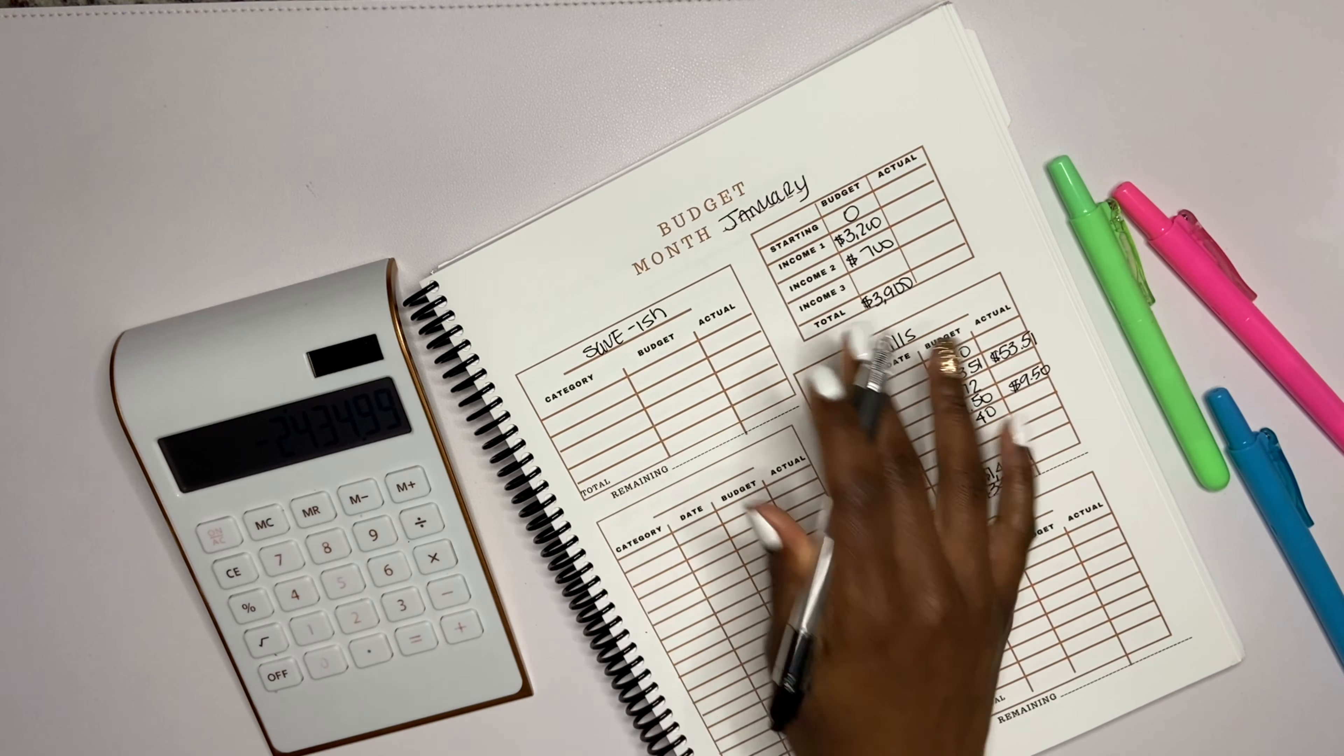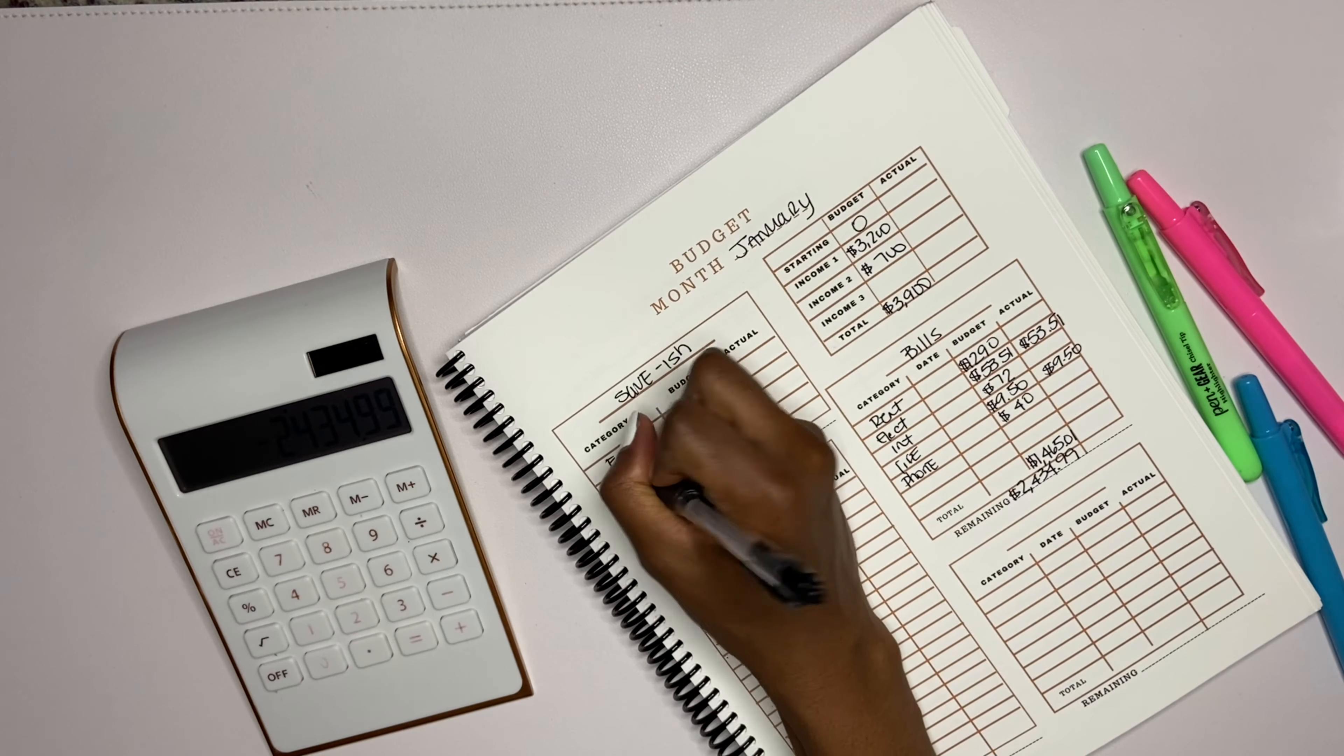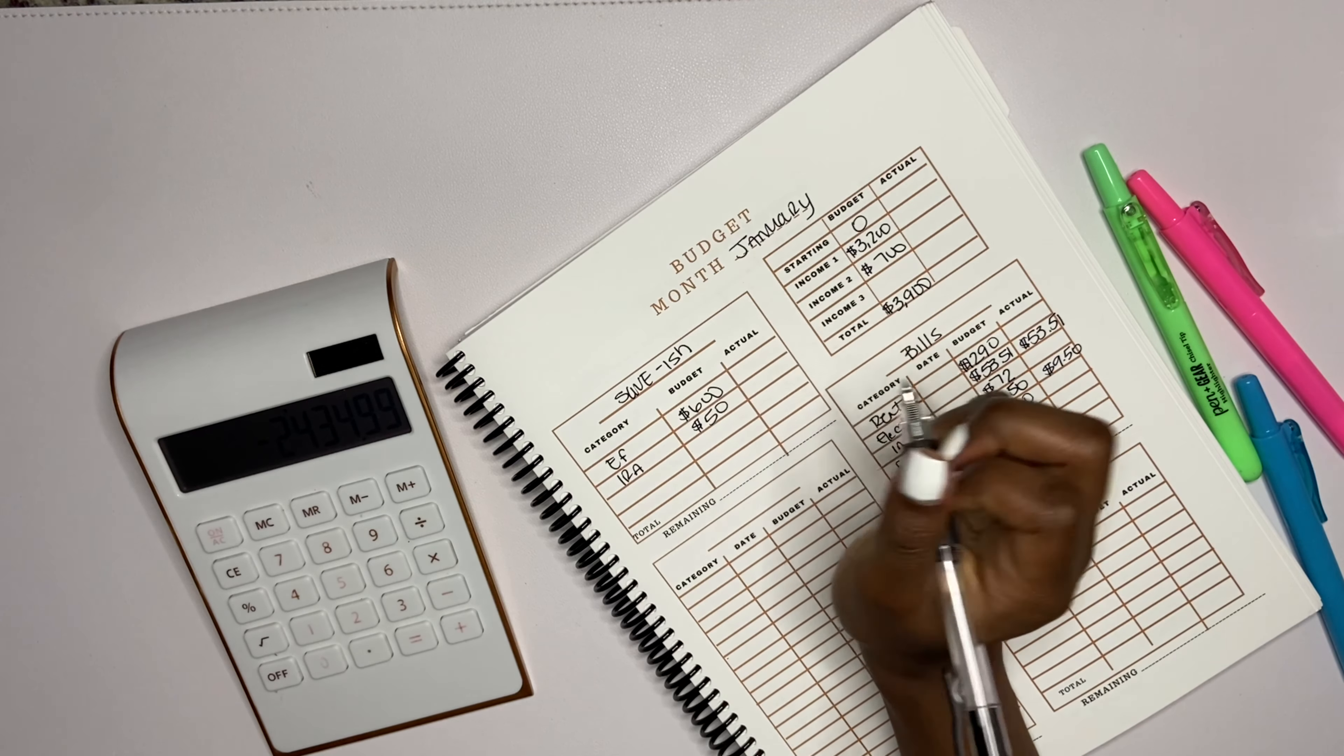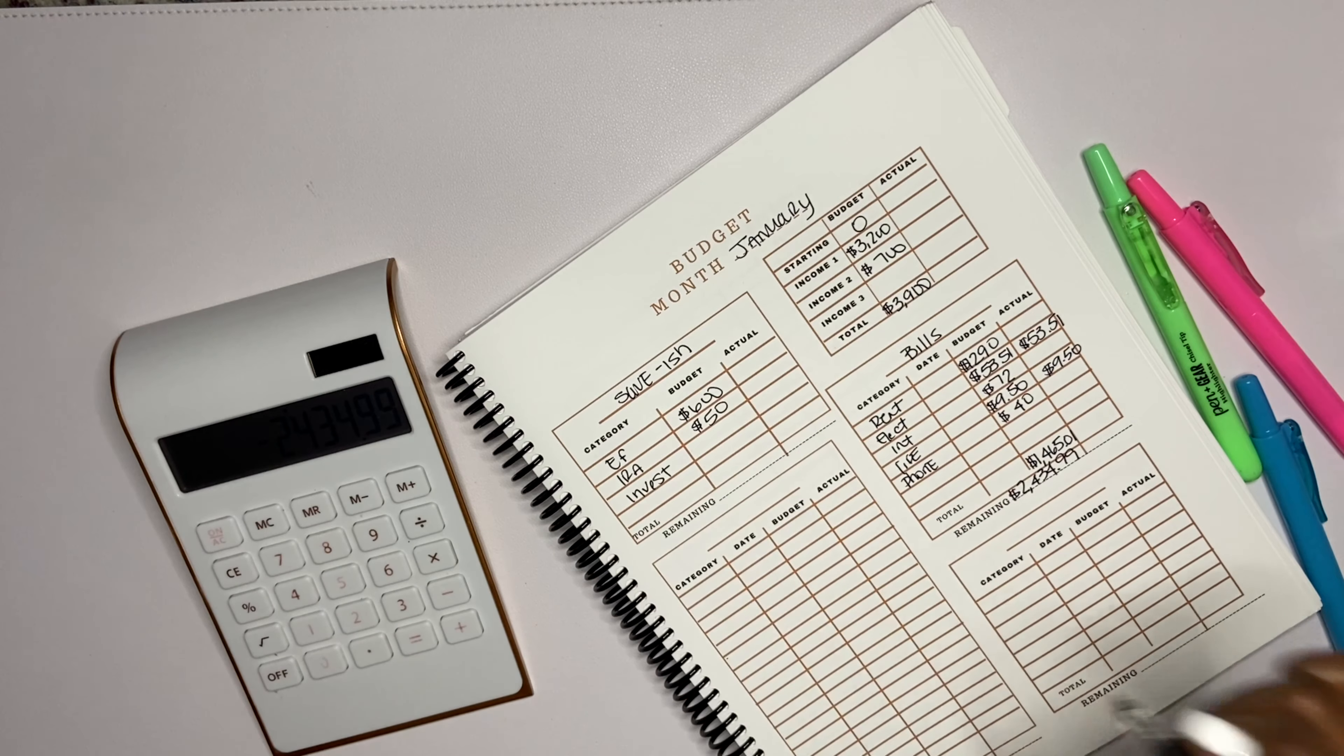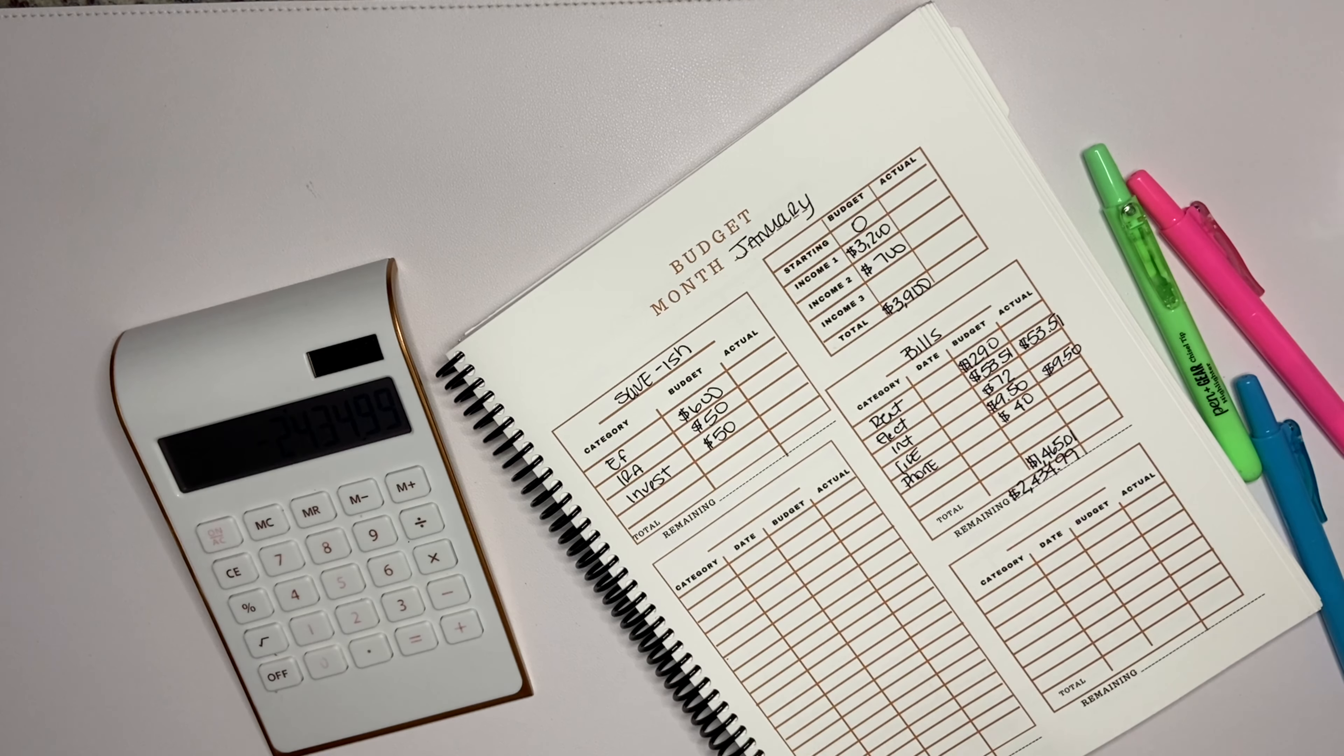Over here we're gonna do savings. My savings that I said I wanted to save, I think I said $600 for debt. That's gonna be my emergency fund, so I'm gonna put EF and we're gonna put $600. Then I'm gonna do my IRA because I haven't really done that in a minute, and that's gonna be $50. Then my investment fund, which I reached $1,000 last year - that was my goal, I probably should update you guys on this stuff - that is gonna be $50 as well.